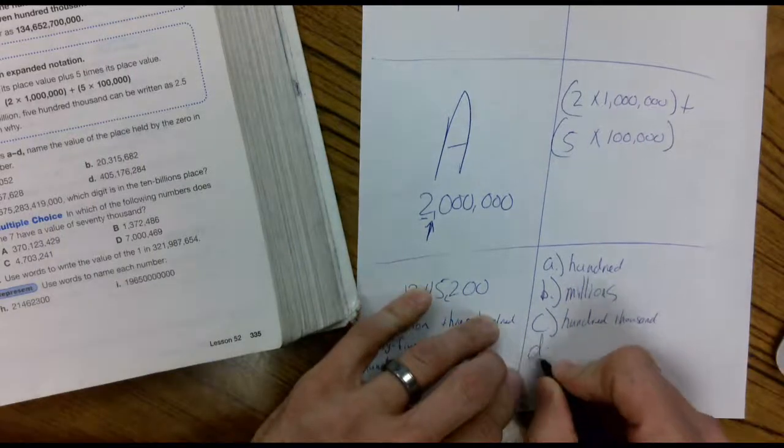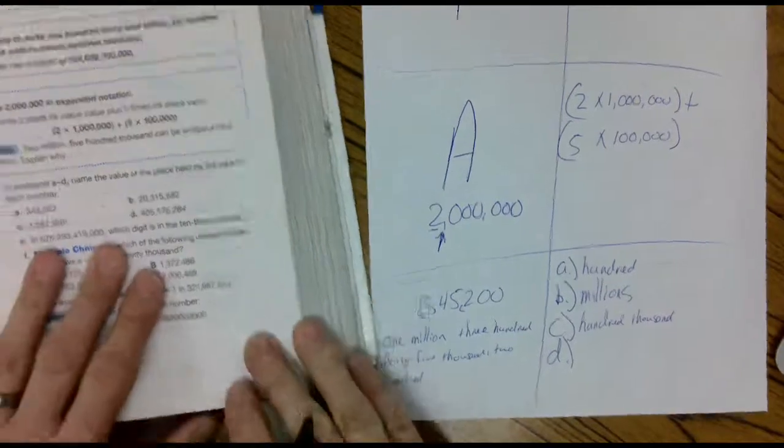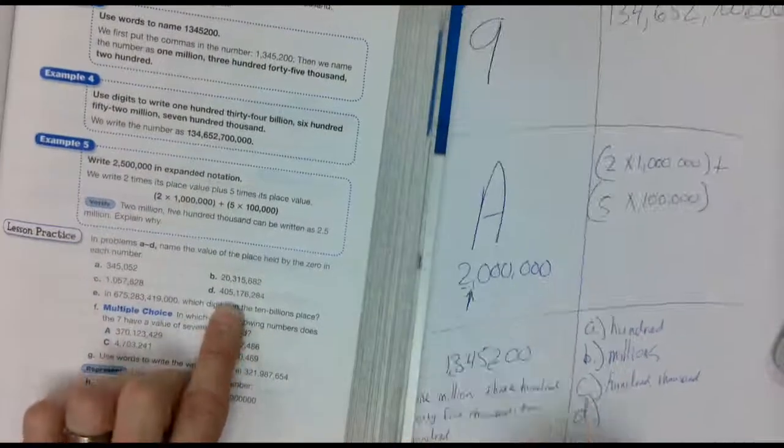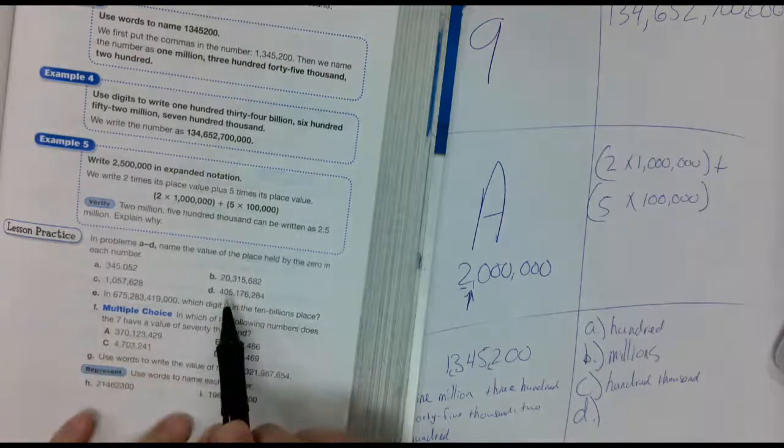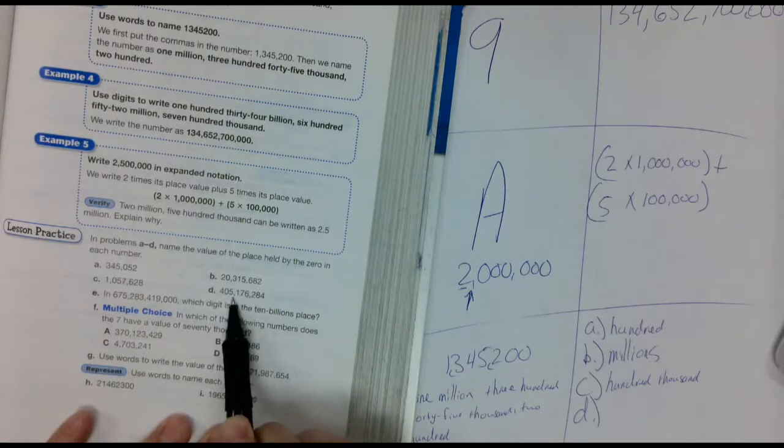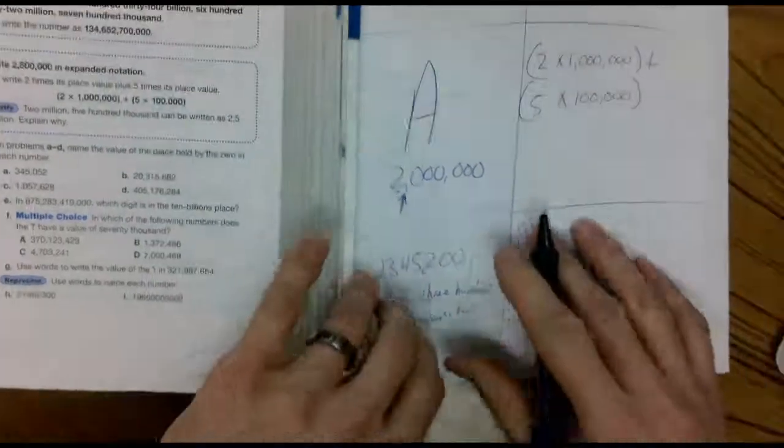And D. D says, 405,176,284. The zero is way up here. Thousands, millions, one million, ten million.